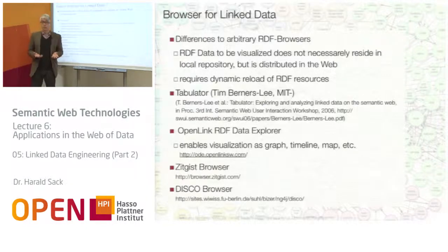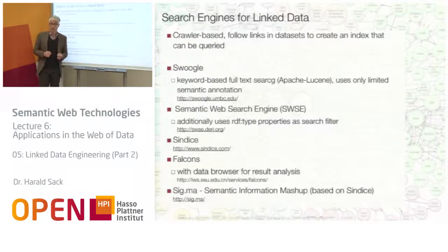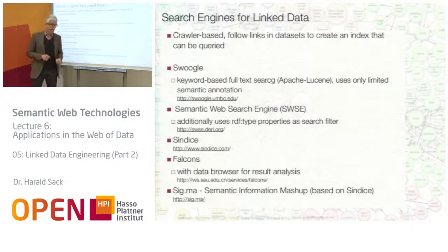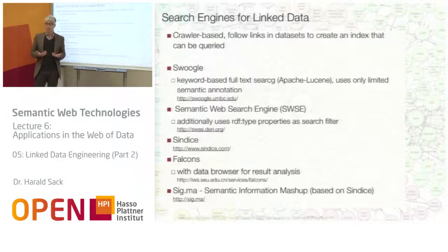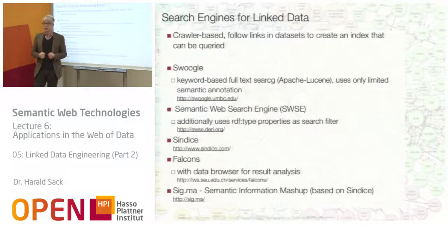There are also special search engines specialized on linked data. The oldest one is a keyword-based full-text search engine based on Apache Lucene that uses only limited semantic annotation. Then there is SWSE — the Semantic Web Search Engine — from the DERI Research Institute. There is also Sindice, Falcons, and Sigma, which is the newest one based on Sindice. You can search for a word and it looks up resources in the linked data cloud related to your query, letting you select certain datasets, ontologies, or entities to use in your applications.